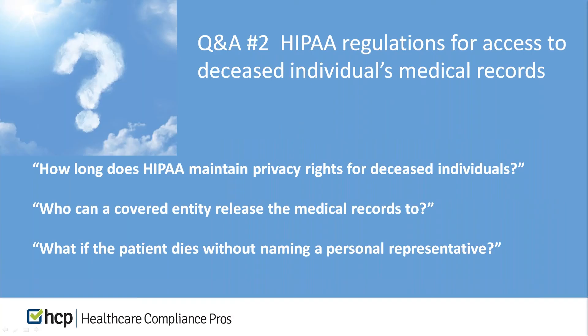Our next topic is HIPAA regulations for access to deceased individuals' medical records. How long does HIPAA maintain privacy rights for deceased individuals? The individually identifiable health information of a decedent is protected for 50 years under HIPAA, following the date of death of the individual. During that 50-year period, personal representatives of the decedent have the ability to exercise rights under the privacy rule with regard to that person's health information, such as authorizing certain uses and disclosures and access to that information.